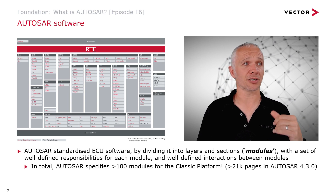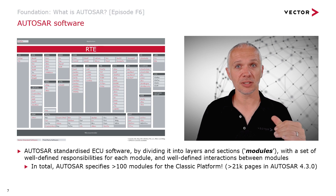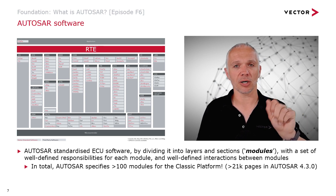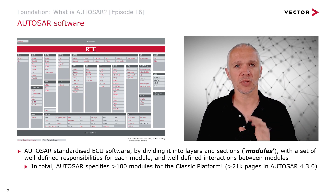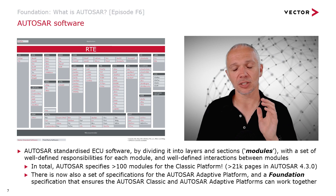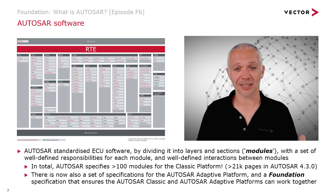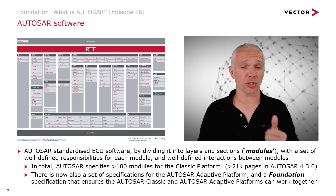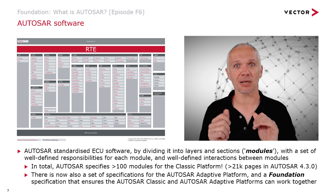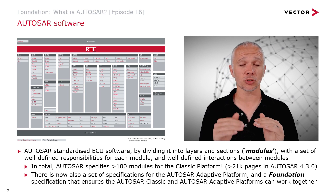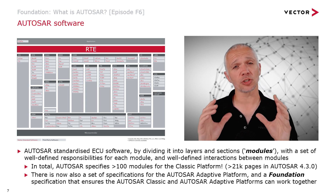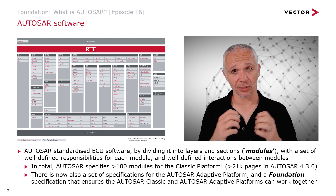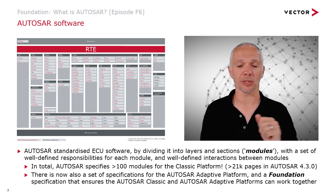Since 4.3 we've had 4.4, which is also sometimes referred to as 19-11, and we've just had 20-11, so the versioning has changed from a major-dot-minor scheme to a year-and-month version numbering. As well as the Classic Platform, there's an additional set of specifications for different versions of the AUTOSAR Adaptive Platform. Really importantly, there's also something called the AUTOSAR Foundation Specification, which ensures that AUTOSAR Classic and AUTOSAR Adaptive platforms are able to work together in the same vehicle and interoperate — a crucial part of the standardisation effort.